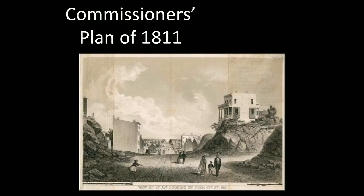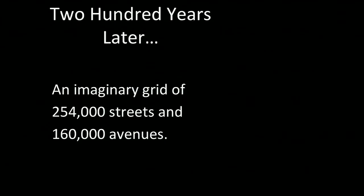Early on it was imaginary, so you'd have these strange avenues with almost no buildings on them, and further up the avenues didn't even exist yet. So what I've built is, 200 years later in 2011, an imaginary grid of 254,000 streets and 160,000 avenues. And all it really is is the existing Manhattan grid, but I just keep all the lines going and just add more streets.